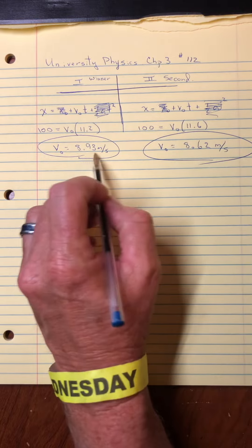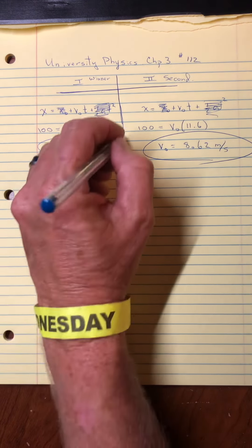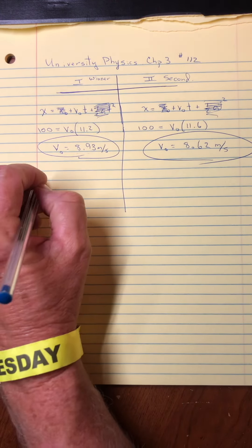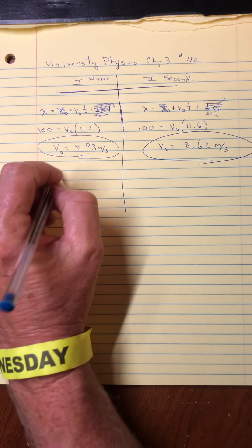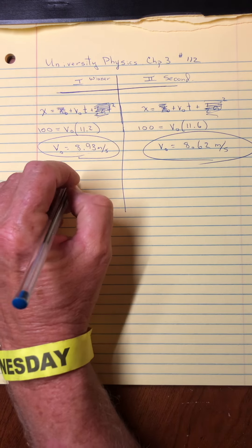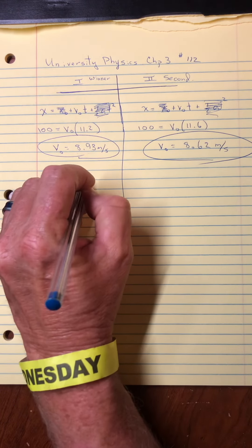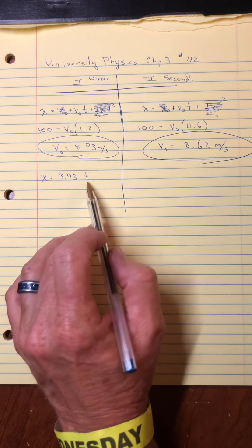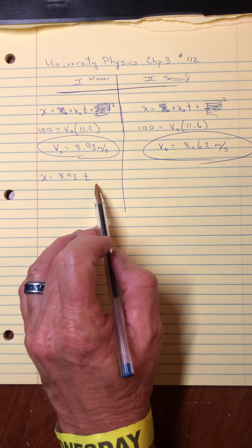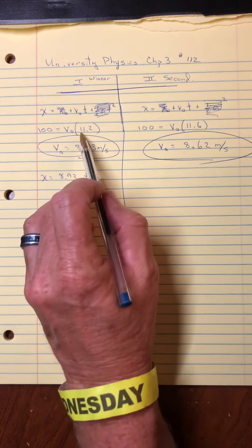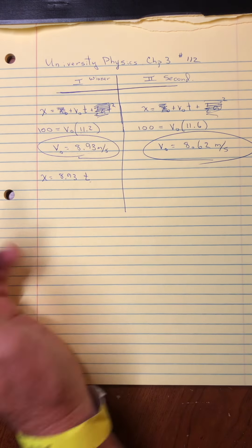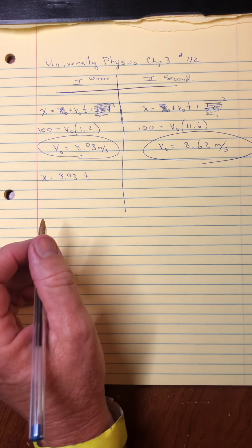But also we have to kind of interpret or read it. So you might do something like this. Knowing the speed of the winner, the equation for the position of the winner would be their speed, 8.93 multiplied by any moment in time. So you could put in one second or two seconds or three seconds, that tells you what the position is. And obviously, if you put in 11.2, then you're going to be at a position 100.